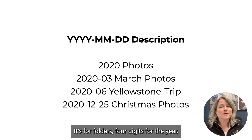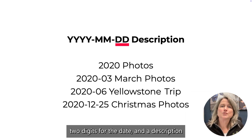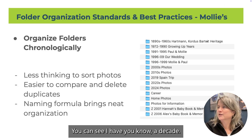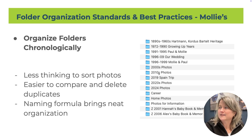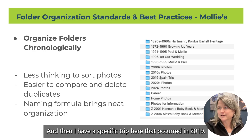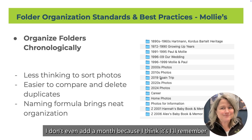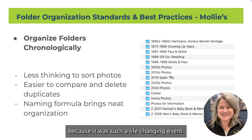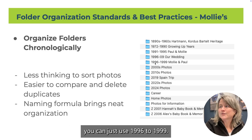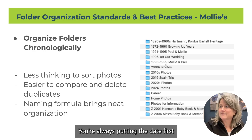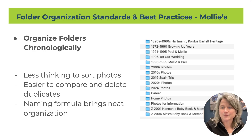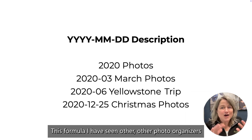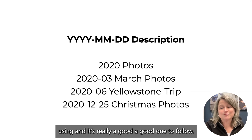Here's the naming formula for folders: four digits for the year, two digits for the month, two digits for the date, and a description. It can be any variation of that. You can see I have a decade, and then a specific trip that occurred in 2019 - I don't even add a month because I'll remember. When you have a span of photos, you can just use 1996 to 1999. You're always putting the date first, so the folders will organize chronologically with ease. I have seen other photo organizers using this formula and it's really a good one to follow.